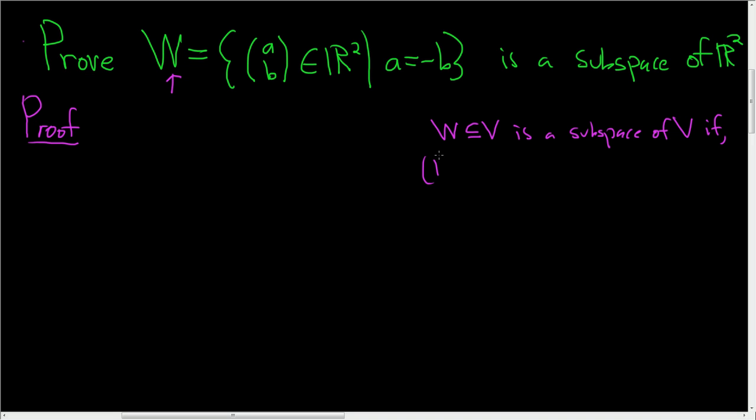If the following three conditions hold. So the first condition is that W must be a non-empty subset. So it cannot be the empty set.